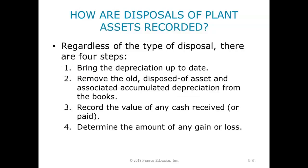There are four steps whether you're disposing, getting rid of, or exchanging an asset. Number one, you've got to bring your depreciation expense up to date as of the date of the sale. Next, you're going to remove the old disposed asset and any associated accumulated depreciation from the books — that means removing the book value, which is cost minus accumulated depreciation. Then you want to record the value of the cash received.